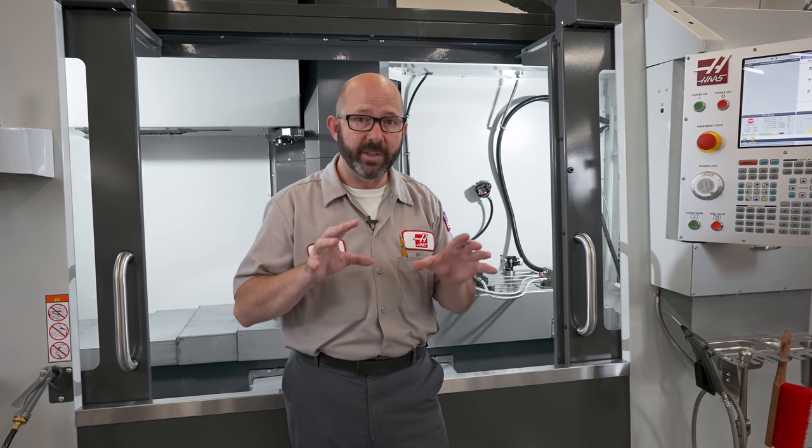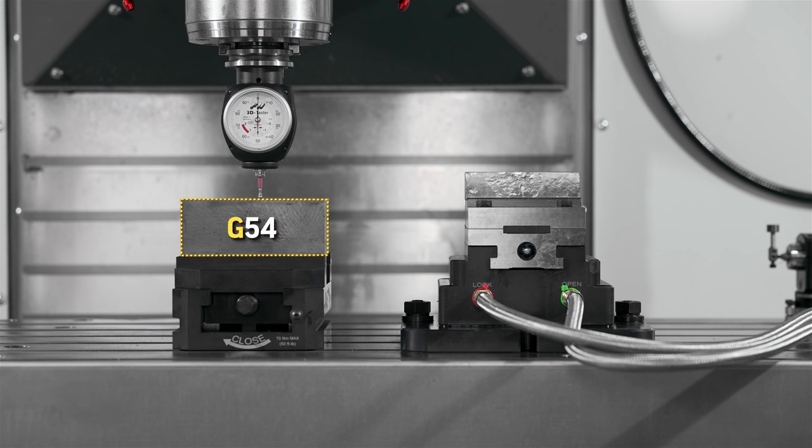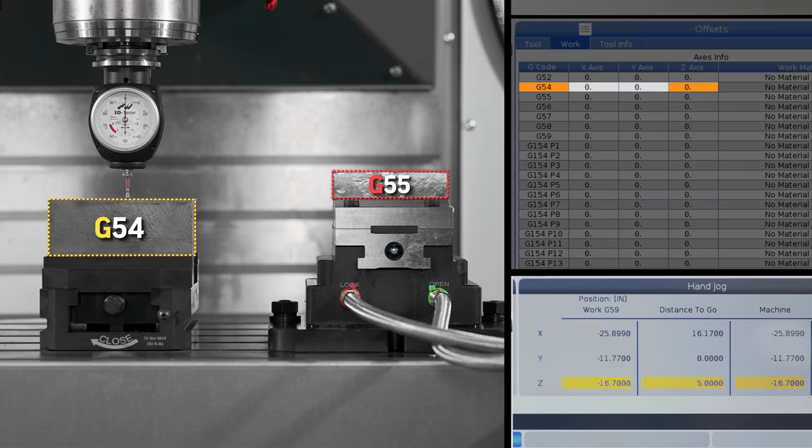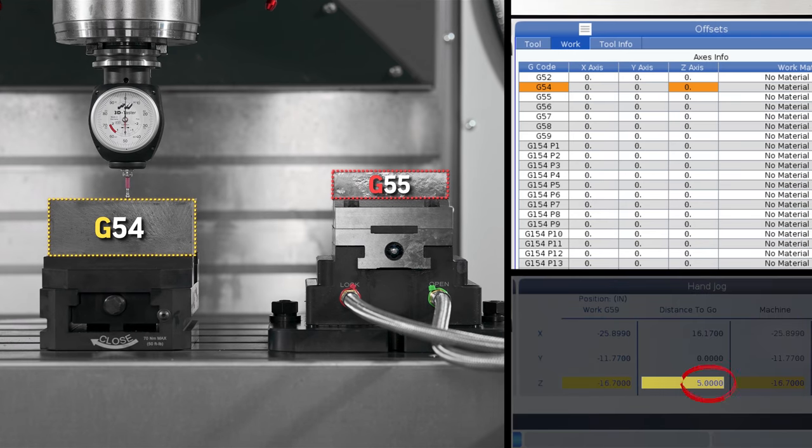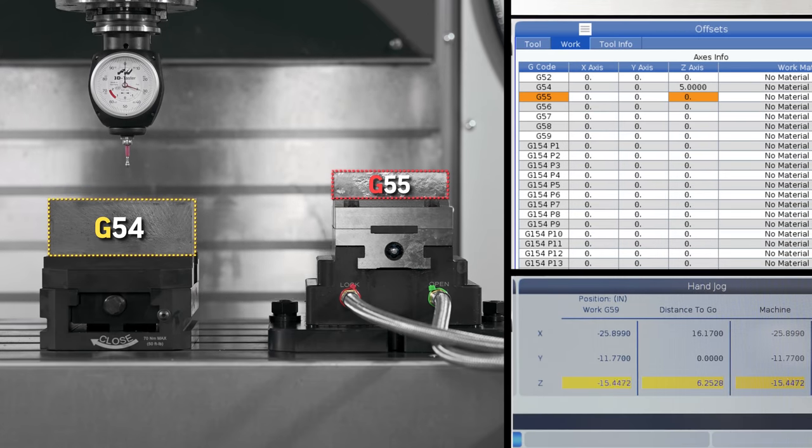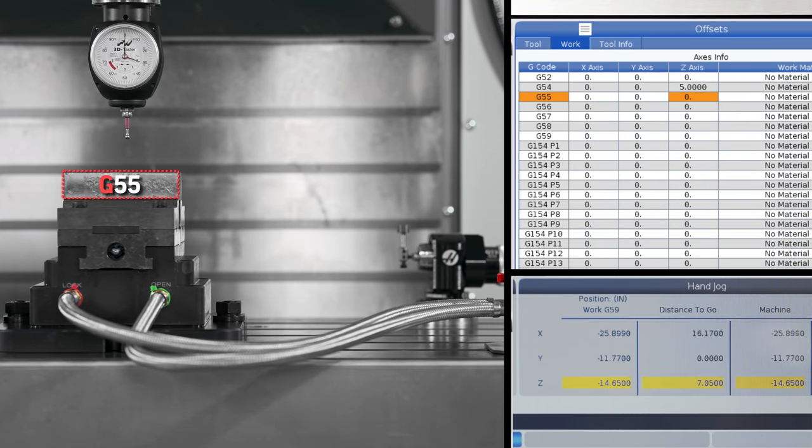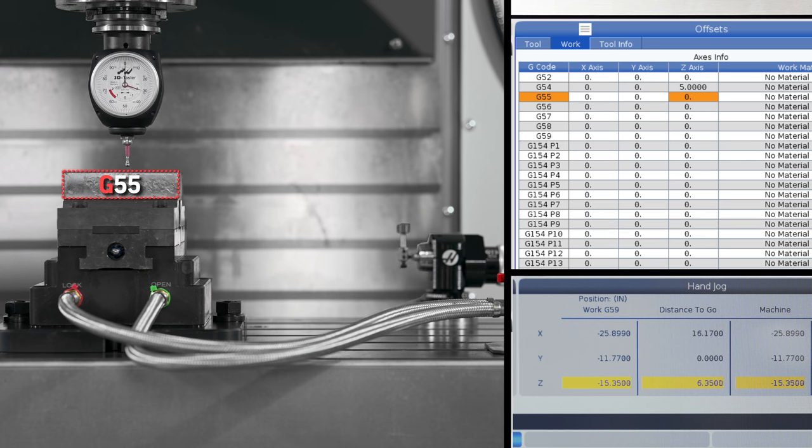We will call this first part G54 and our second part G55. So under G54 we will enter the distance we measured as our Z-axis work offset.